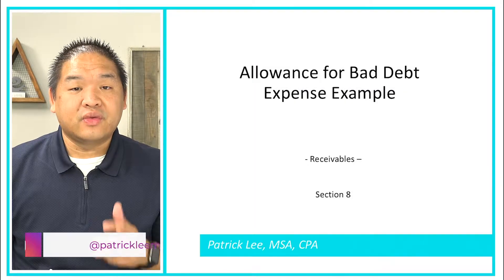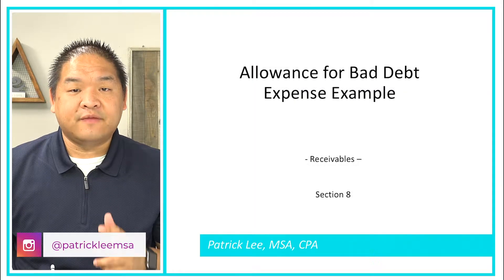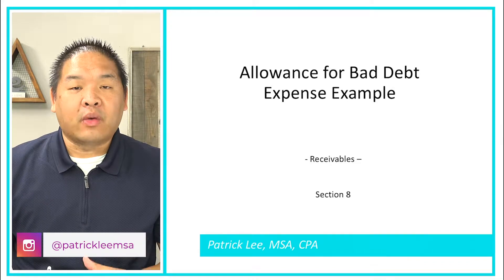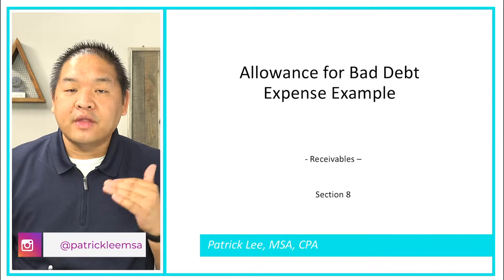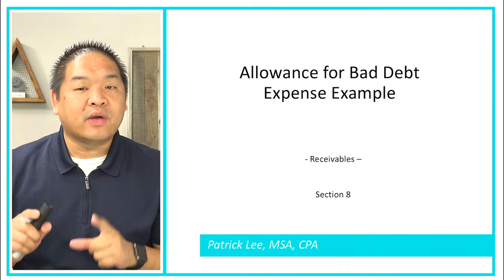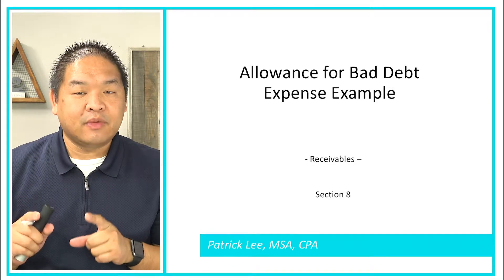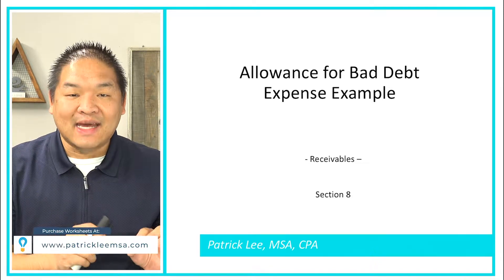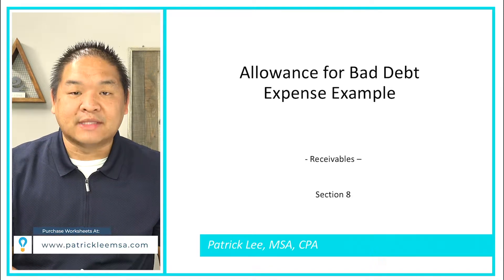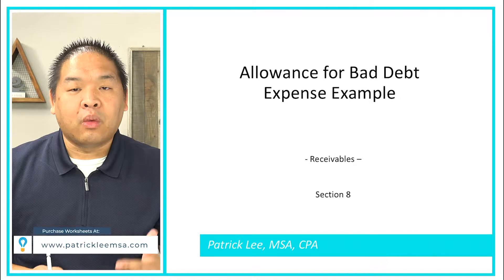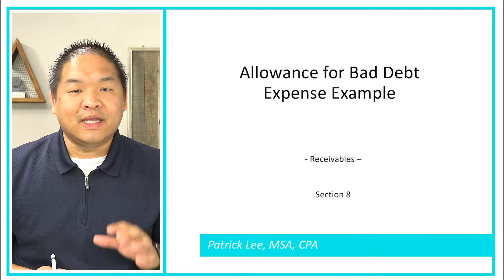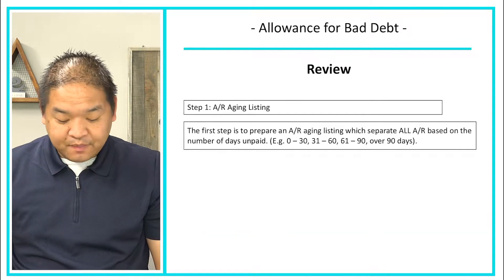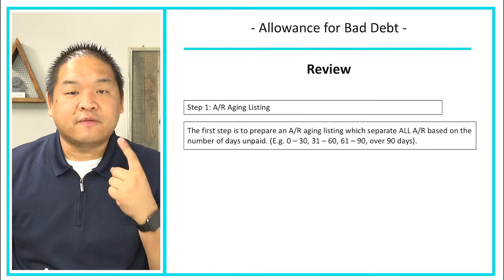In this lesson, we are going to go through the allowance method for bad debt. We're going to show you an example and walk you through all the steps associated to get to the allowance for bad debt number, and then how we calculate the bad debt expense. As a review, we're going to have four steps.